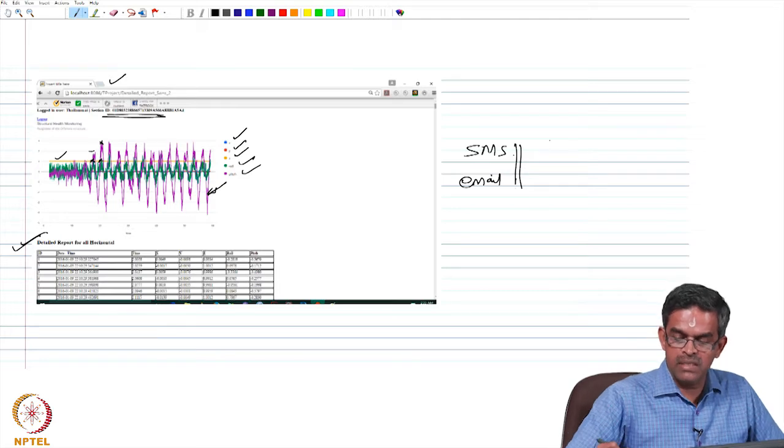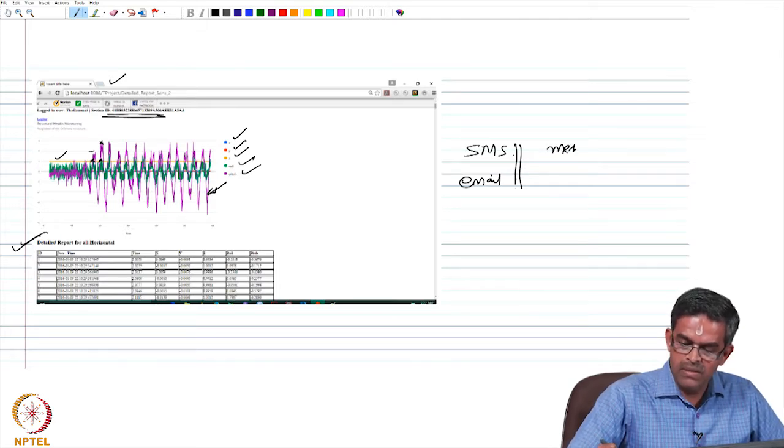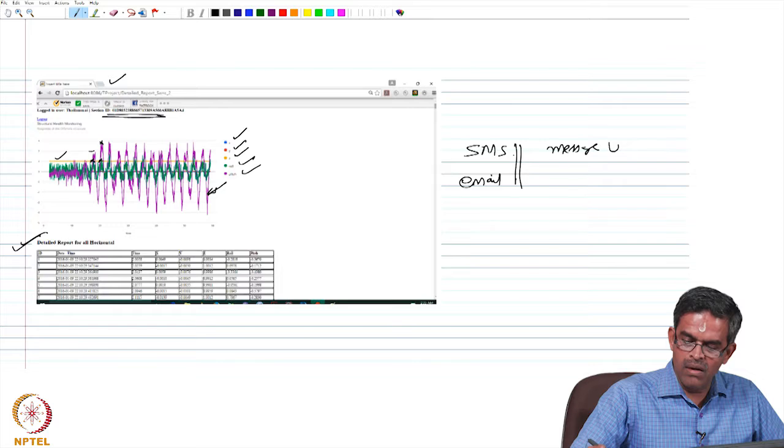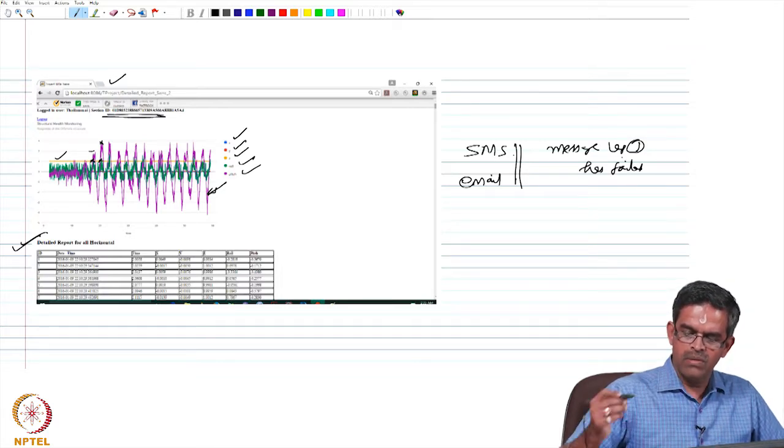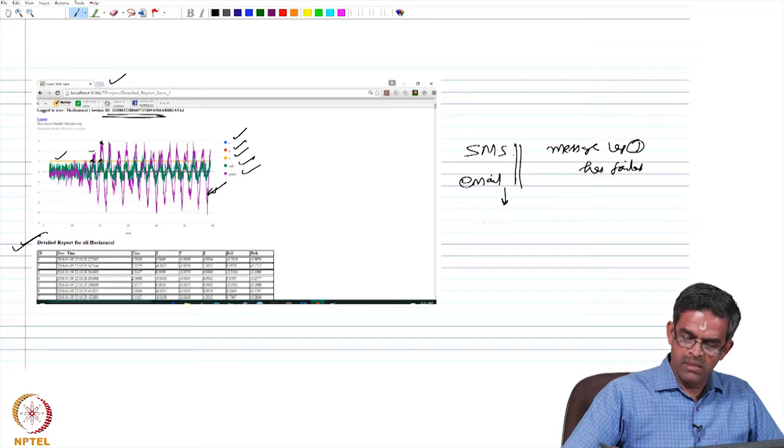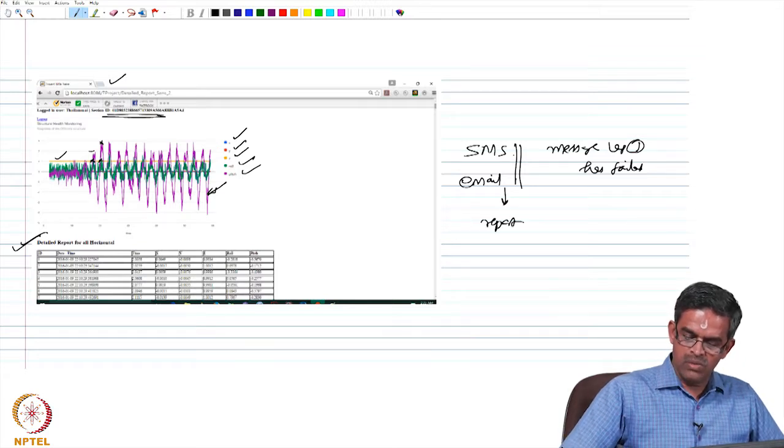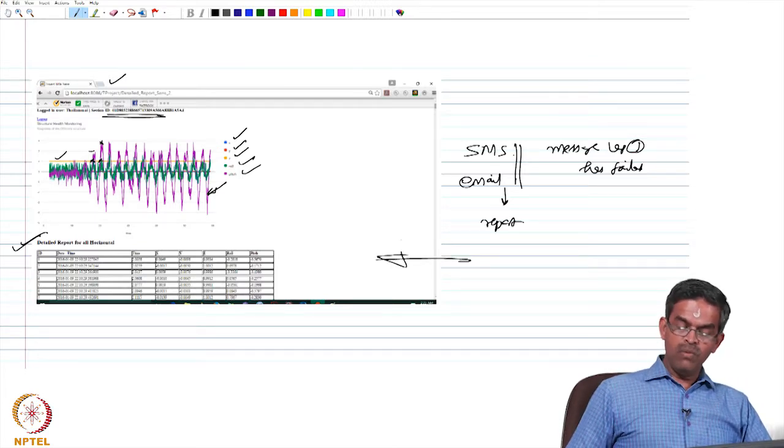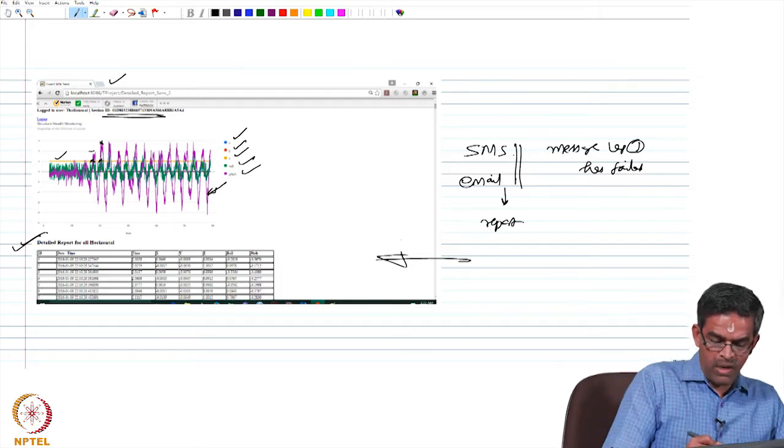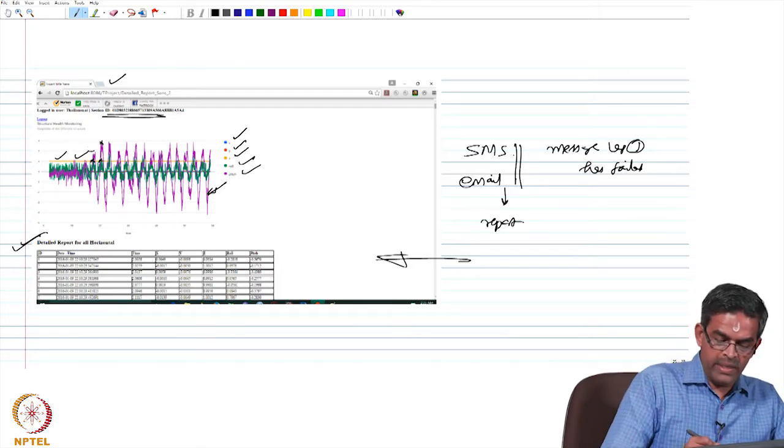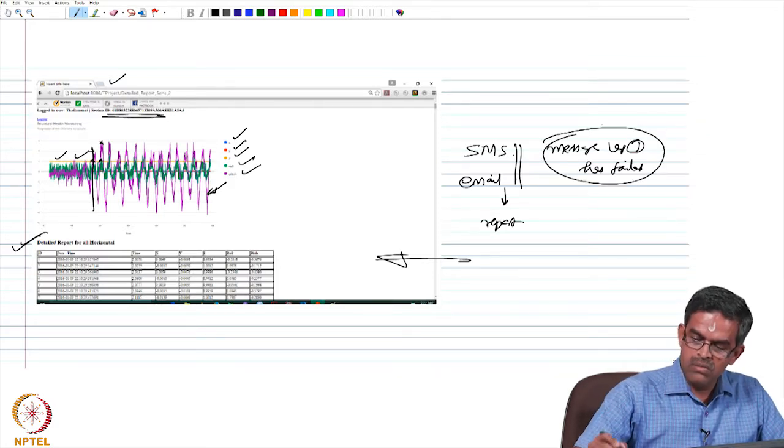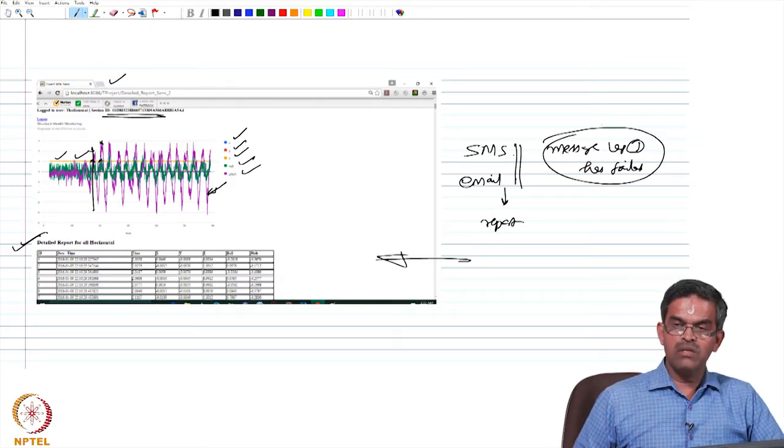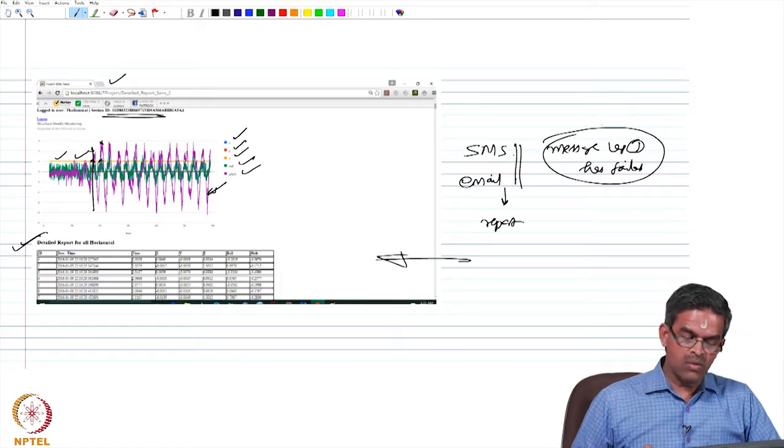The SMS indicates a message saying that leg 1 has failed for example, whereas email says the complete report, the complete report as you see in the screen here. One will know what is the level of exceedance, when it has occurred, what is the location of the damage and what is the quantification.